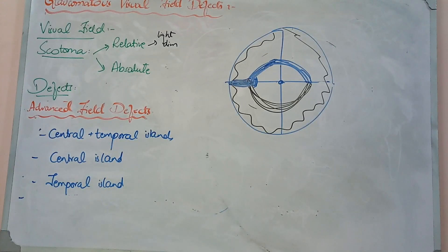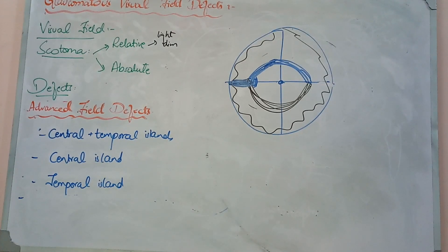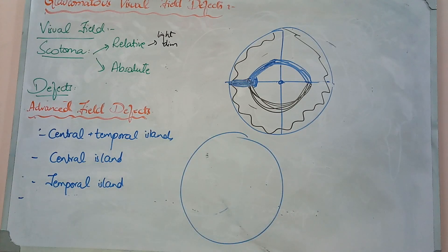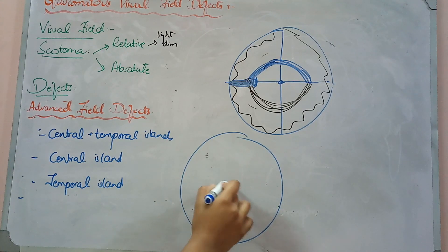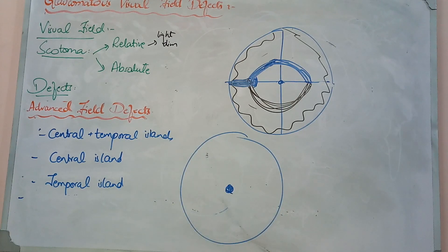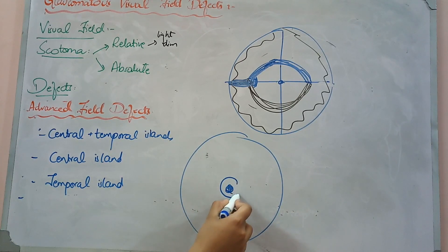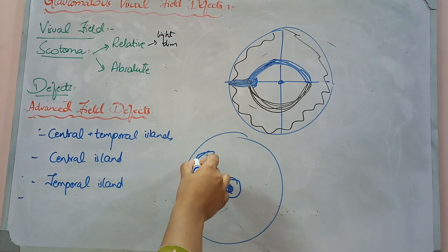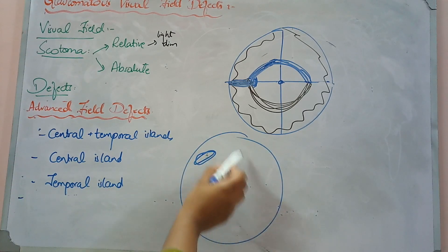Advanced visual field effects — the name of advanced visual field effects involves central and temporal islands. What happens is that we have advanced visual effects where if all the visual field is bad — like the central fixation point and surrounding areas — you can see only small remaining islands. That is not the main area; your remaining vision is your blind area for most of the field.